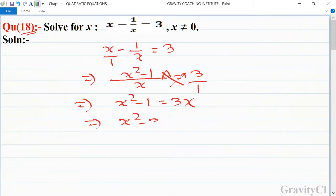This implies that x squared minus 3x minus 1 is equal to 0. Now we use the quadratic formula. Here a is equal to 1, b is equal to minus 3, and c is equal to minus 1.